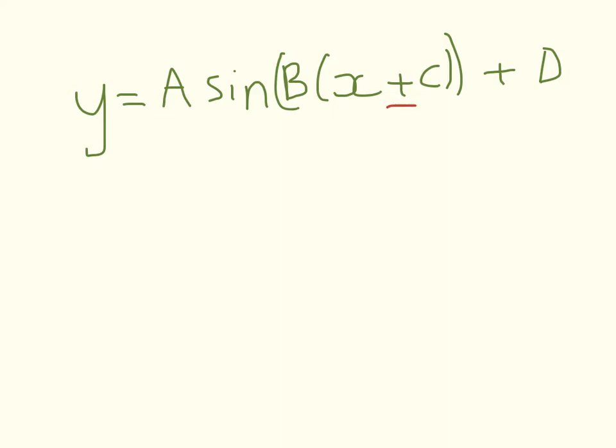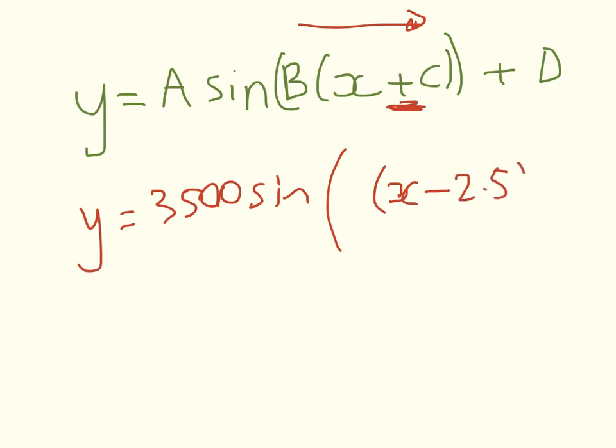Remember that the plus sometimes, and in our case will be a minus, because we are transforming our graph in this direction. So we're going to have y equals 3,500 sin(something for the horizontal stretch factor)(x minus 2.5) plus 8,500.